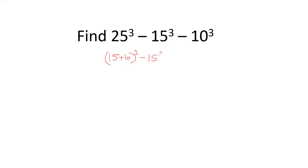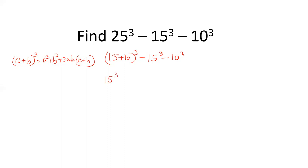This is 15 cube and this is 10 cube. Now, using the formula (a + b) whole cube equals a cube plus b cube plus 3ab(a + b), with a = 15 and b = 10, we expand 25 cube as 15 cube plus 10 cube plus 3 into 15 into 10 into (15 + 10).